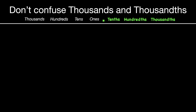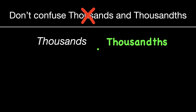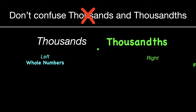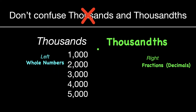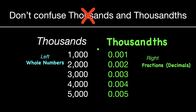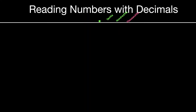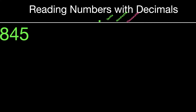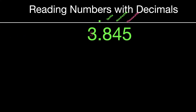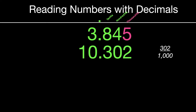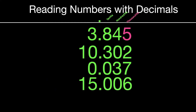Don't confuse thousands and thousandths — that's a common mistake because they're spelled very similarly. Thousands are on the left side; thousandths are on the right. Thousands are whole numbers; thousandths are fractions. Be looking out for the 'th' in thousandths. When you read numbers with decimals, remember that you need to say the name of the place value. For example: 3 and 845 thousandths, 10 and 302 thousandths, 37 thousandths, 15 and 6 thousandths, 81 thousandths.